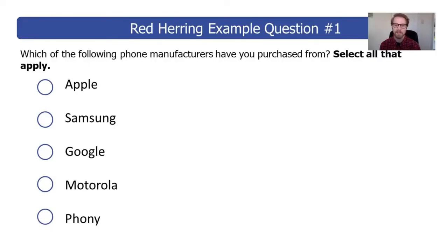Here's an example of the red herring question. Let's say it's about smartphone manufacturers. You ask a multiple response question: which of the following smartphone manufacturers have you purchased from, selecting all that apply? The list includes well-known brands like Apple, Samsung, Google, LG, and Motorola — and then you throw in a fake one called Phony, a kind of punny name.